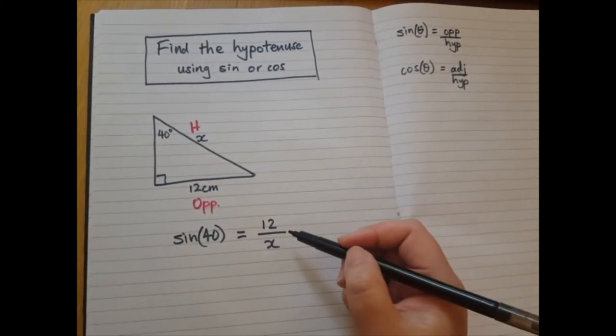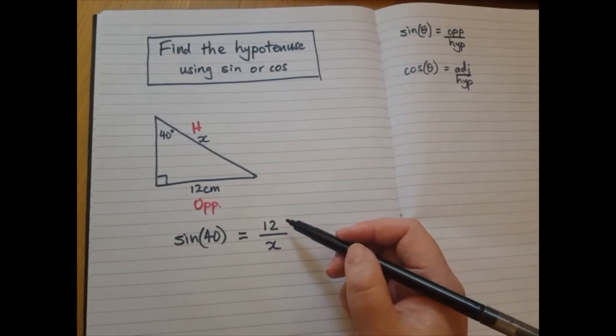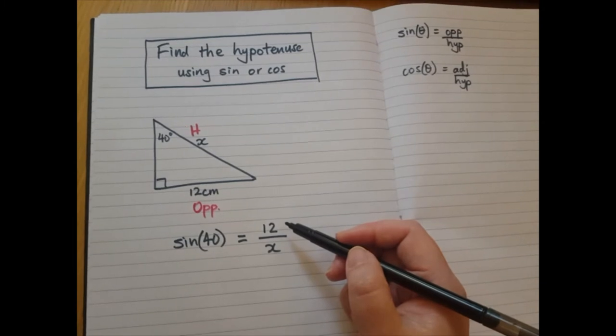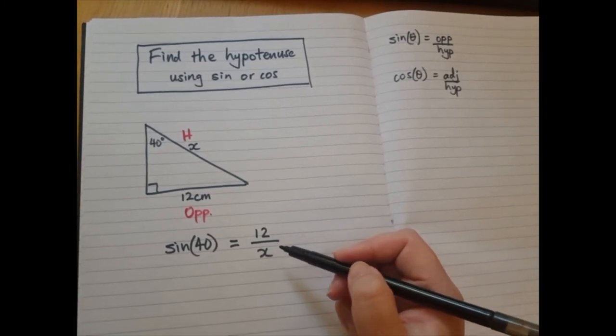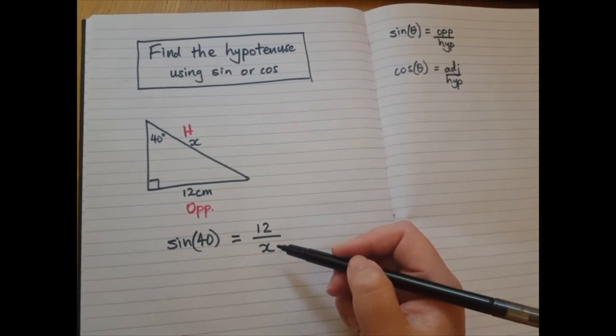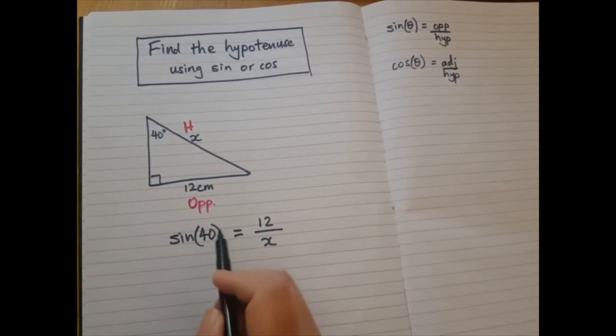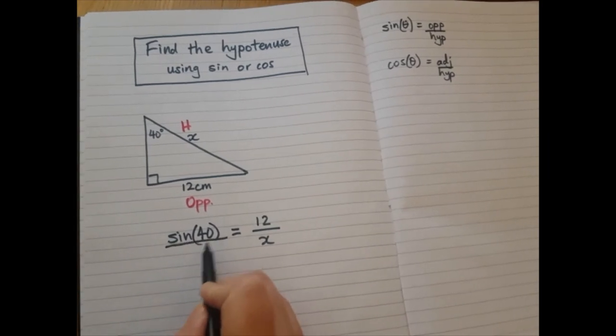Previously, the number we wanted to find was in the numerator of the fraction, but now the one we want to find is on the denominator. So this is what I recommend. You want to turn this number, the sin 40 number, into a fraction like this.